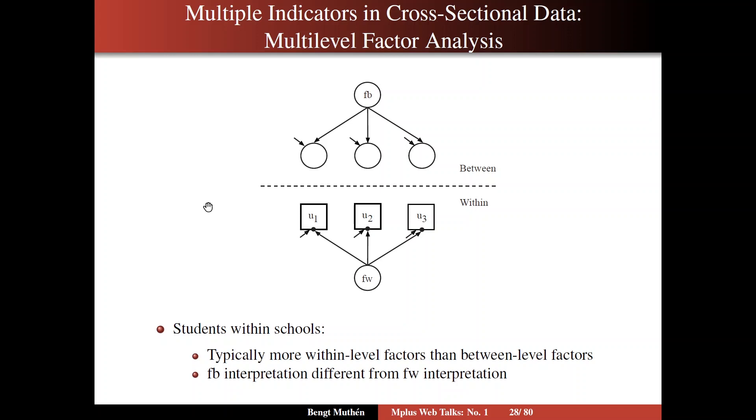So here we have a situation where we allow a random intercept for each variable, for each factor indicator. In this case, letting them vary across schools.